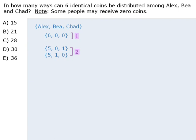What about the case where Alex receives 4 coins? If Alex receives 4 coins, then there are 2 coins remaining to distribute between B and Chad. B could receive 0 coins, 1 coin, or 2 coins. So there are 3 possible outcomes when Alex receives 4 coins.